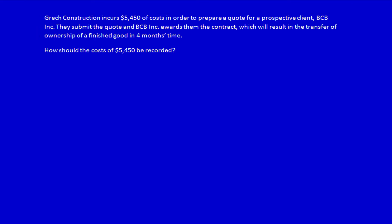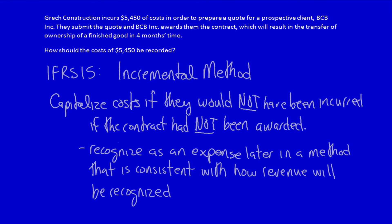An entity could incur significant costs in order to obtain a contract with a customer. For instance, if I'm having a house built and I give architectural drawings to three different construction companies, those construction companies could incur a huge amount of costs in order to tender a bid to build my house. These costs can only be capitalized if they would not have been incurred had the contract not been obtained.